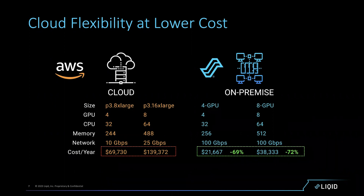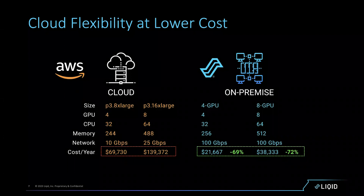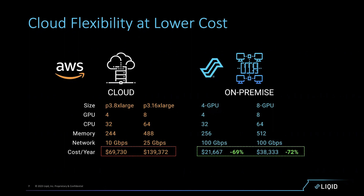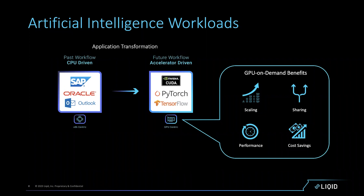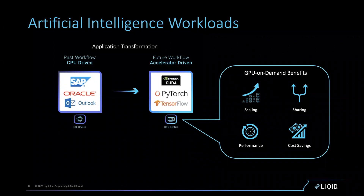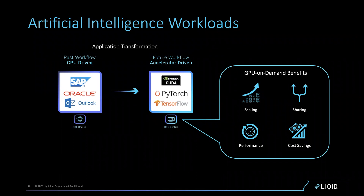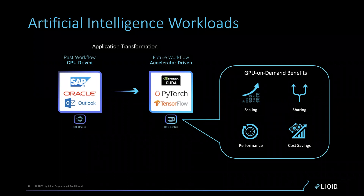We think next-generation AI workloads are very important — things like generative AI are the next killer applications our customers will be deploying. There has to be a more economical way of approaching this. At the heart of what we're trying to do, we are changing the economics of how we deploy these accelerators. Whether it's machine learning, deep learning, data inference, generative AI, or natural language processing, we think the next generation workloads are GPU-centric — we don't think it's going to be an x86-centric world any longer.